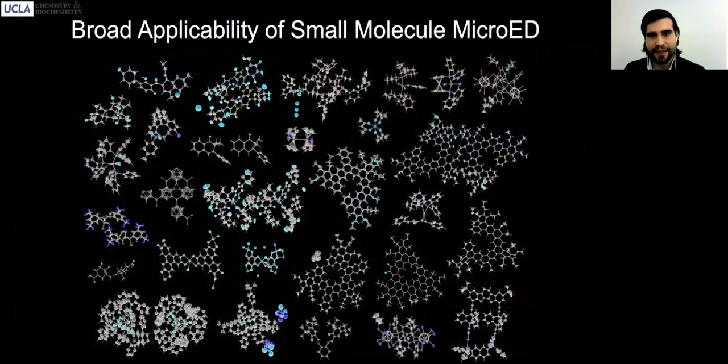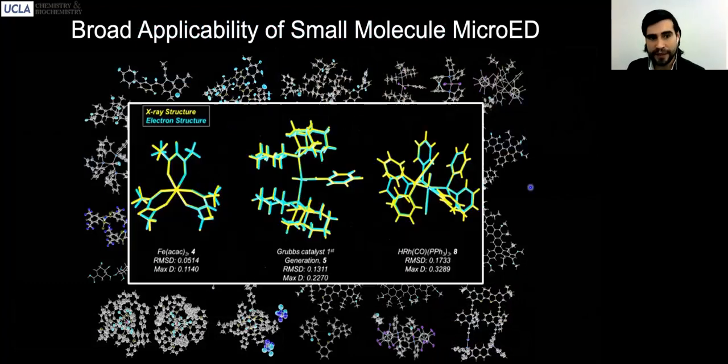Since that publication in just the last year, just at UCLA, a growing number of structures have been determined by this method. Most importantly, the structures are accurate when we look side by side, the structures determined by electron diffraction versus structures determined by large perfect crystals in x-ray crystallography experiments. They're essentially indistinguishable from each other.